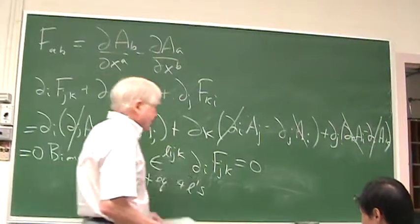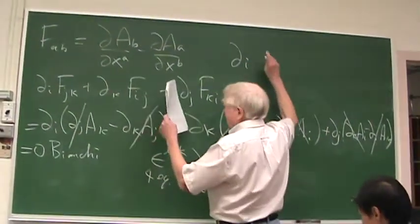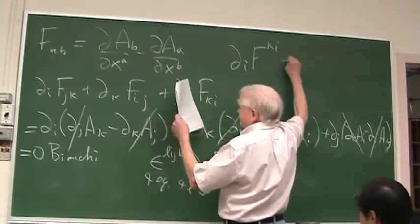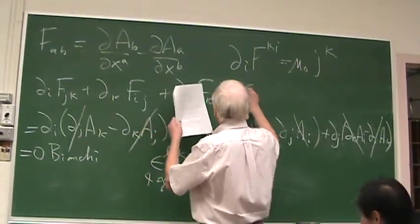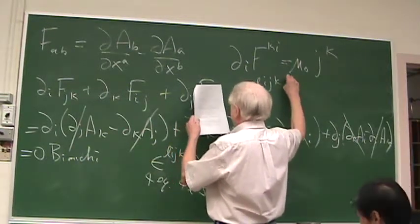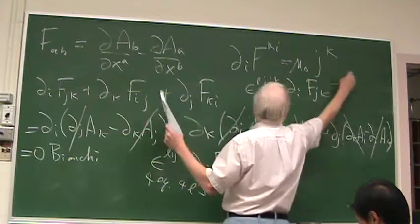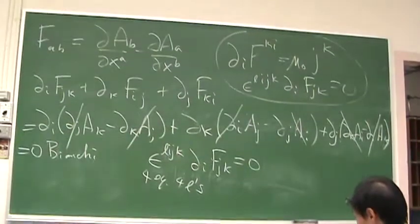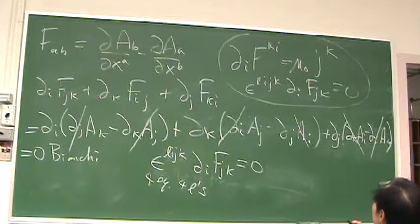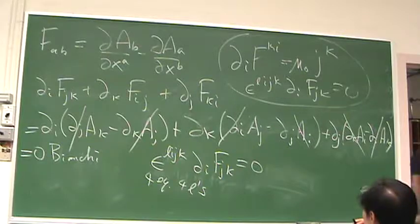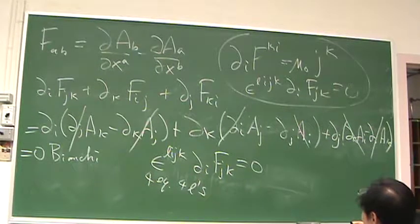So those are the two homogeneous equations. We can rewrite the inhomogeneous equation as D-i F-ki equals mu-zero times J-k. These then are Maxwell's equations. The epsilon form gives four equations — four values of L: zero, one, two, three. For example, setting L equals zero gives D-one F-23 plus D-two F-31 plus D-three F-12 equals zero, which is the divergence of B.